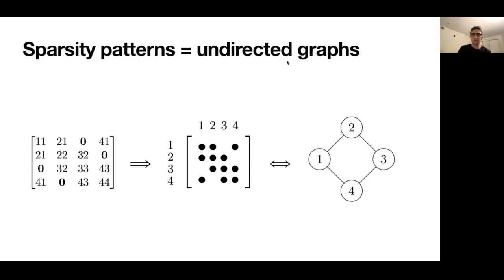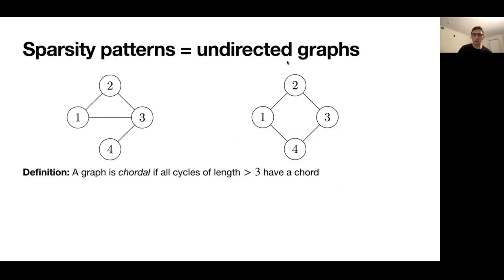So it's useful to think of sparsity patterns as undirected graphs. A sparsity pattern of a matrix is essentially just an indicator of where there are non-zeros and where there are zeros. So for example, the sparsity pattern of the matrix here on the left is shown in the center. And this corresponds to an undirected graph by looking at the off-diagonal entries and everywhere we have a non-zero drawing an edge between the corresponding vertices of that graph.